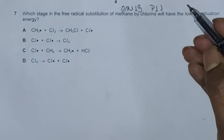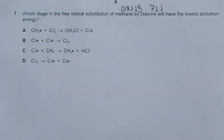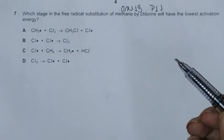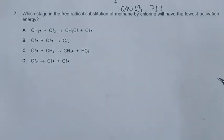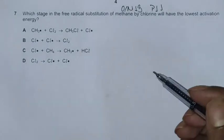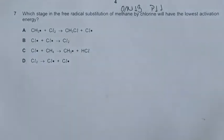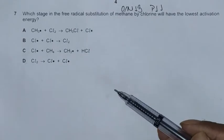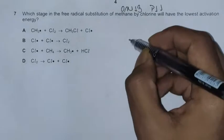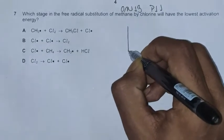Unpaired electrons mean they are very vulnerable to attack, so the more free radicals we have, the less energy we need to form the products. Activation energy means the minimum amount of energy reactants should have to give the products.